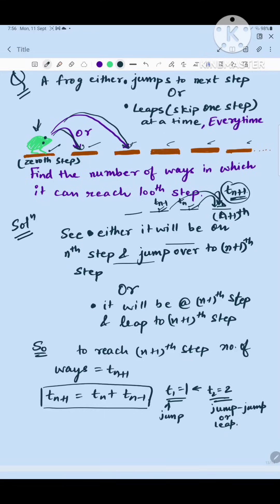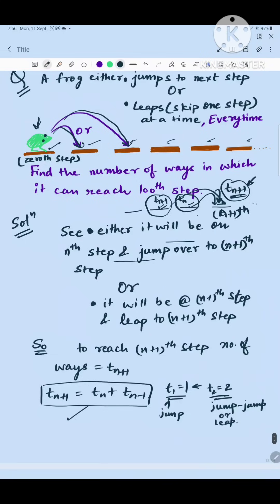So these are the 2 ways in which the frog can land on the n+1th step. So we can say to landing on the n+1th step, the number of ways in which it can reach nth step times 1 plus number of ways in which it can land on the n-1th step times 1 because it will leap. So t_{n+1} is t_n plus t_{n-1}.